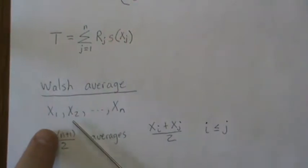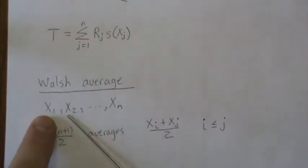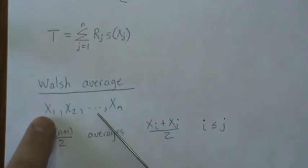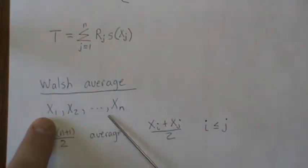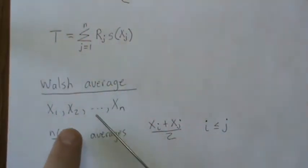We take this average, one with two, then one with three, then one with four, then one with n, and then we start here.